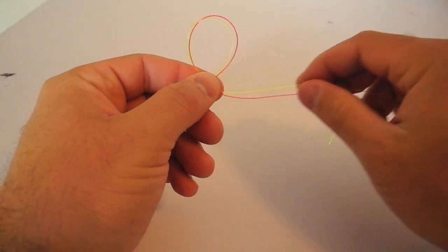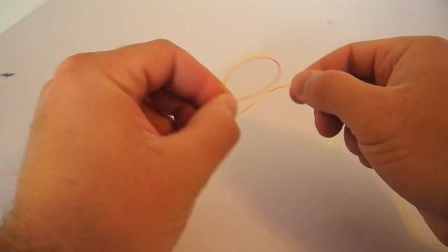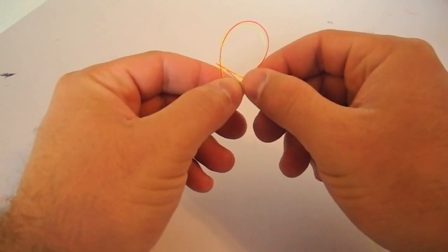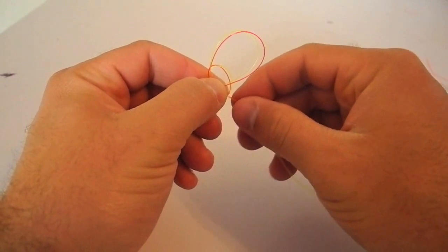Then what I'm going to do is I'm going to take the tag end of the leader and the tippet and I'm going to go around that loop once again and I'm going to pinch it off. That loop is going to be smaller than the first loop that you made.